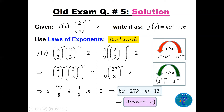Since (2/3)^(-3) inverts and cubes to give (3/2)^3 = 27/8, we have a = 27/8. There is no vertical shift, so m = 0. Comparing with the form k · a^x + m: k = 4/9, a = 27/8. Adding k + a + m gives 4/9 + 27/8 = the answer, and the answer is 13, corresponding to answer choice C.